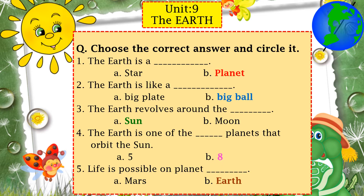Number four: the earth is one of the dash planets that orbit the sun. The earth is the third planet — out of how many planets are there in total? Five or eight? Eight planets. Yes, so the earth is one of the eight planets orbiting the sun.